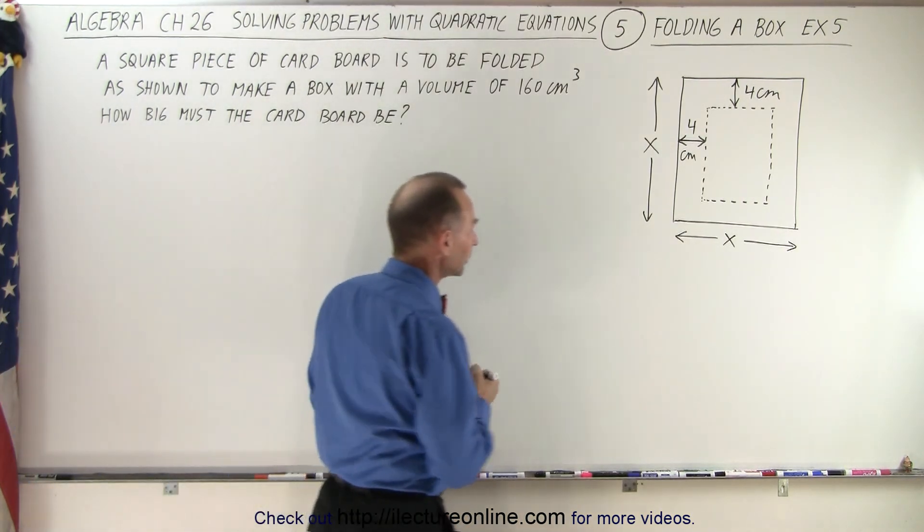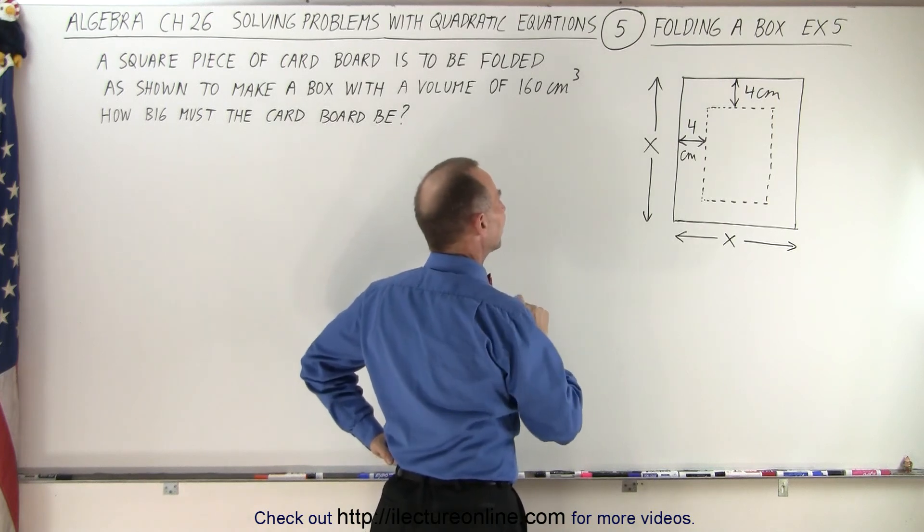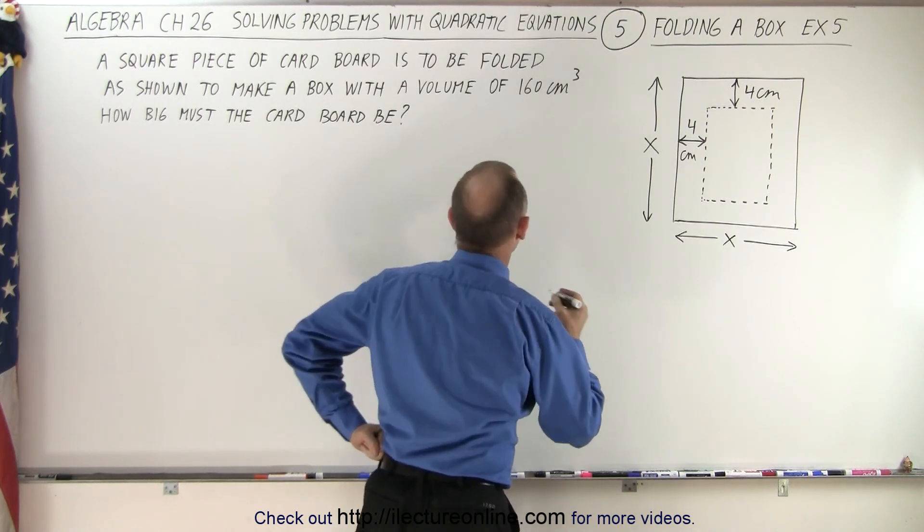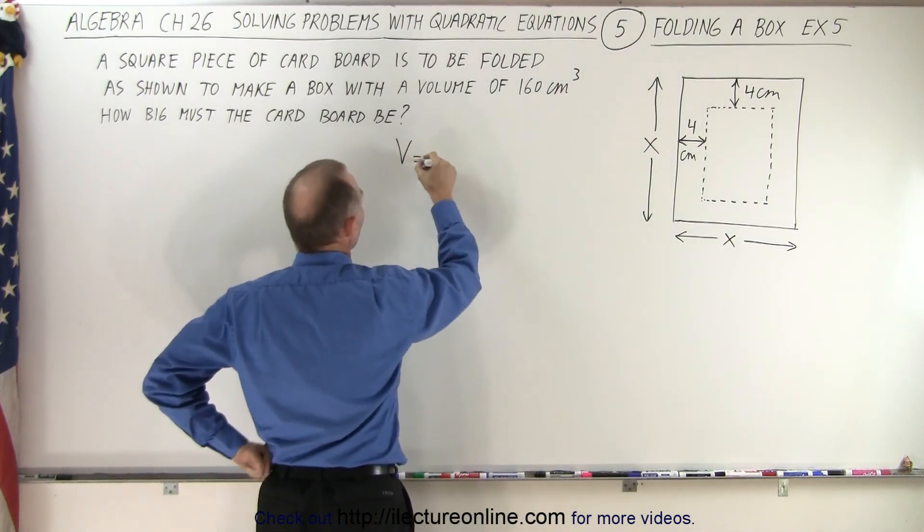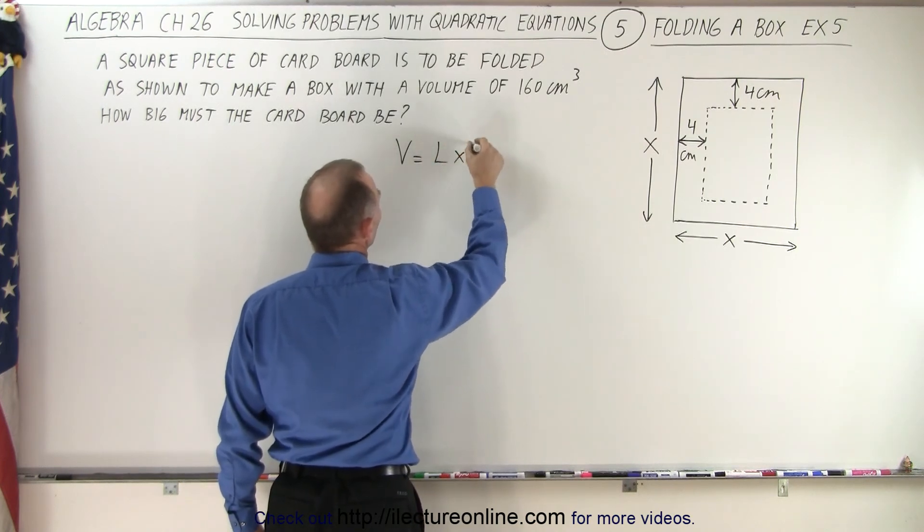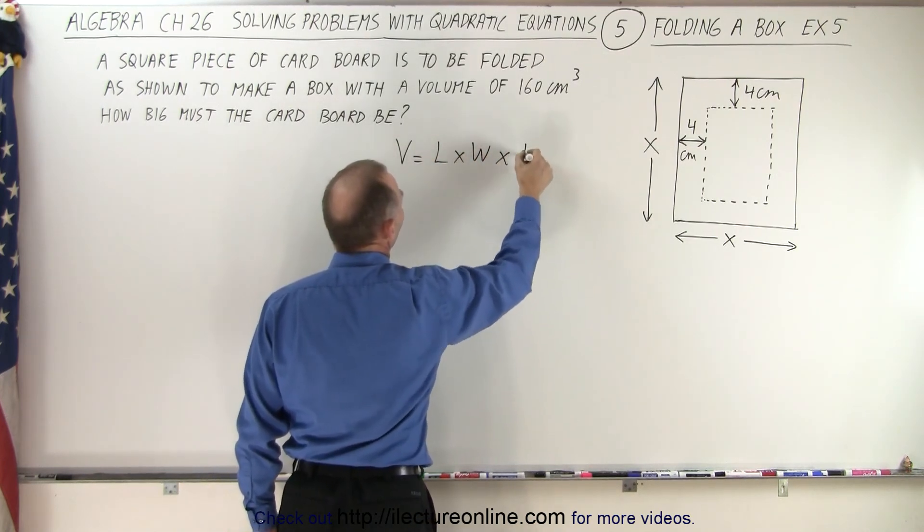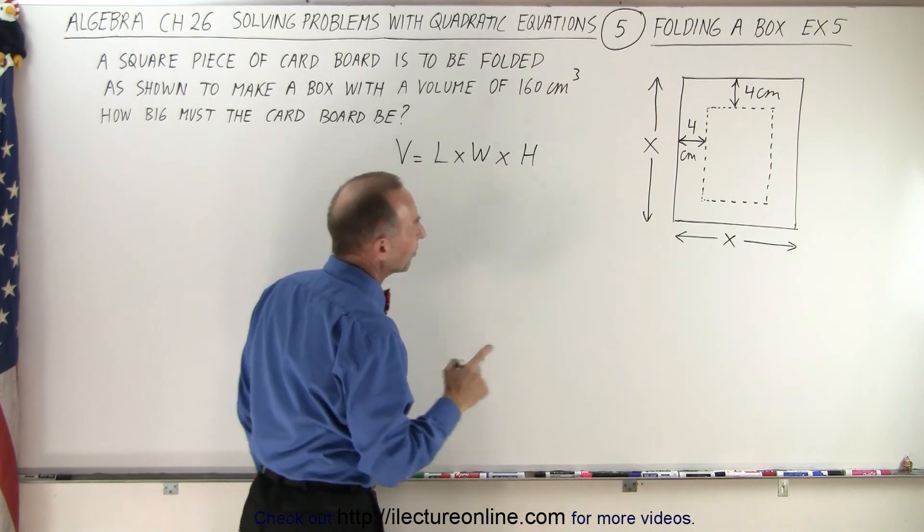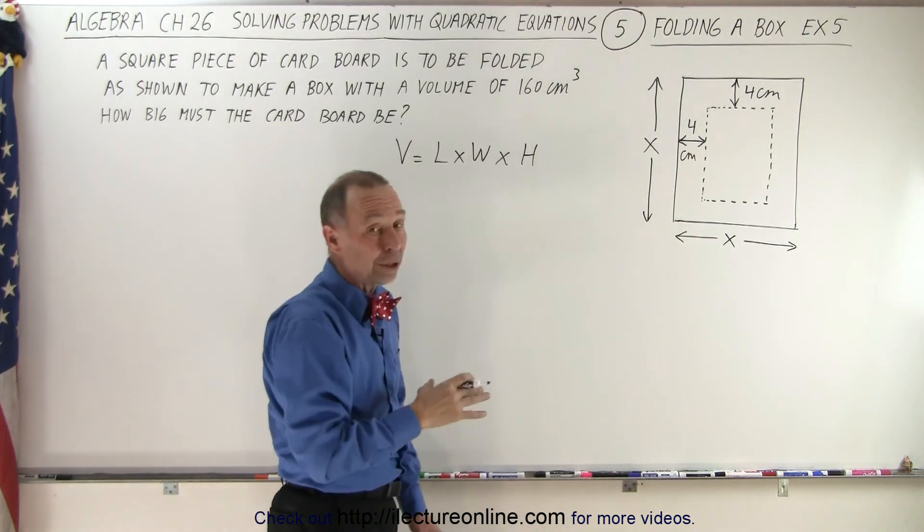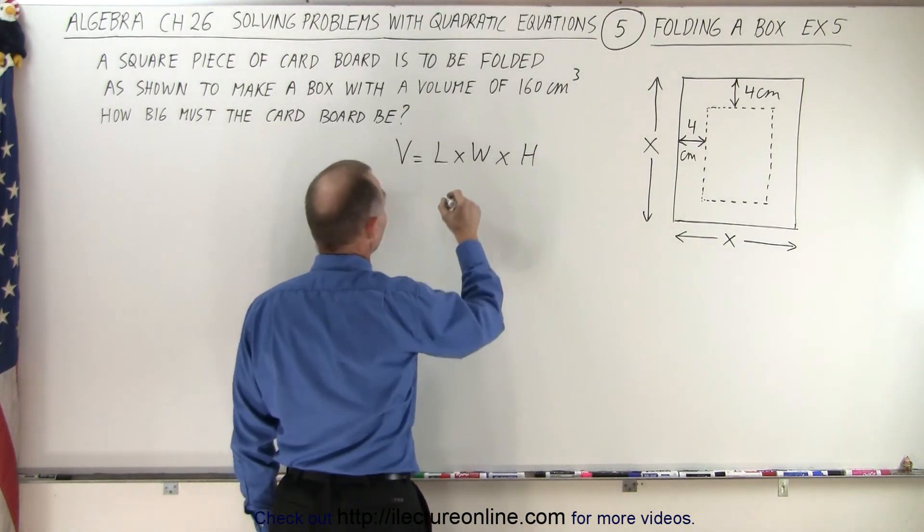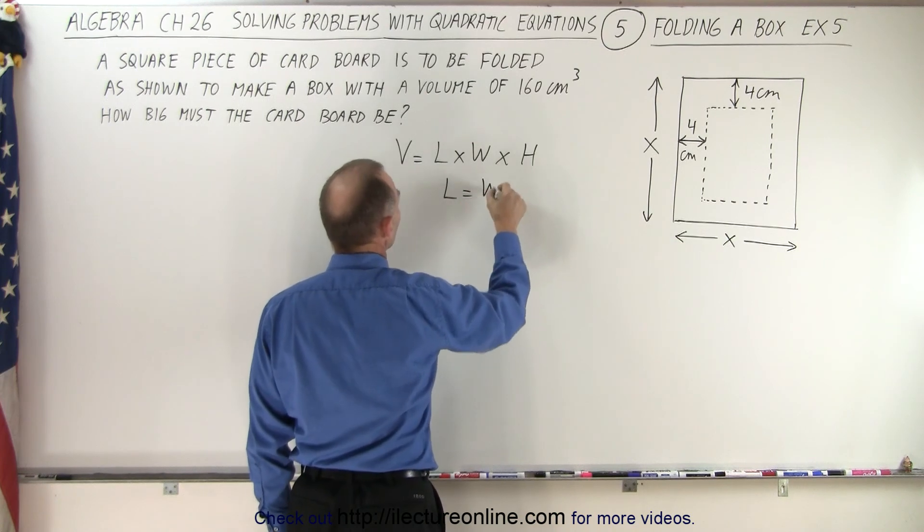Alright, so what we can say is first of all we know that the volume of a box is equal to the length times the width times the height. Now in this case we can see that the length and the width are going to be the same, so we can say that the length is going to equal the width.